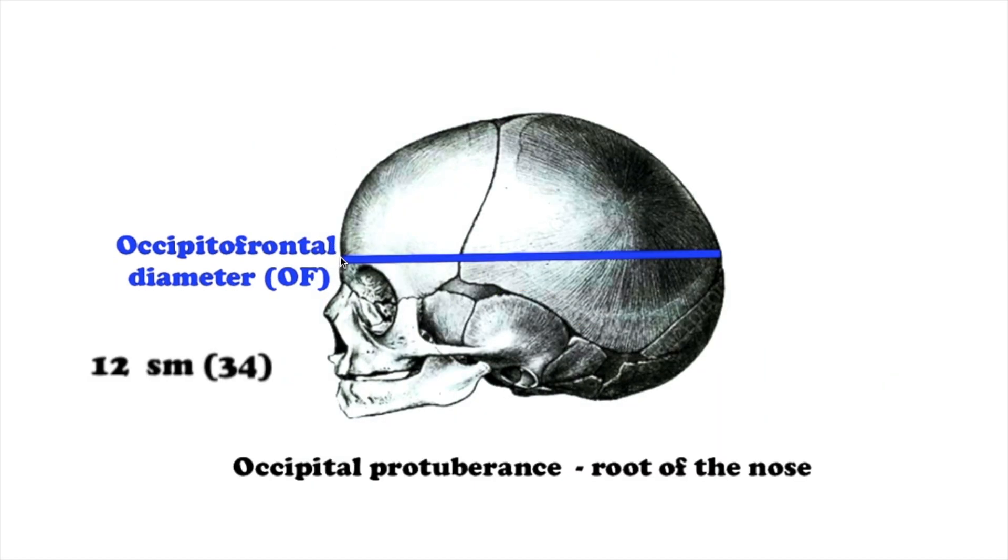The straight dimension, diameter occipitofrontalis, is measured from the bridge of the nose to the most protruded point of occipitofrontalis, makes 12 cm. The frontal occipital circumference equals 34 cm.